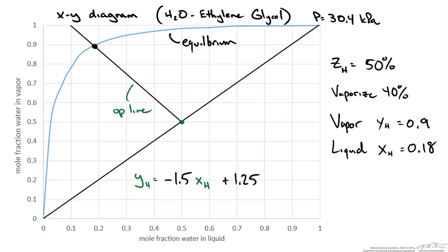If you need to determine the operating temperature, you can locate these compositions on a Txy diagram. Note that no flow rates were given; by choosing a basis you could calculate them and use the results to double-check our material balance.